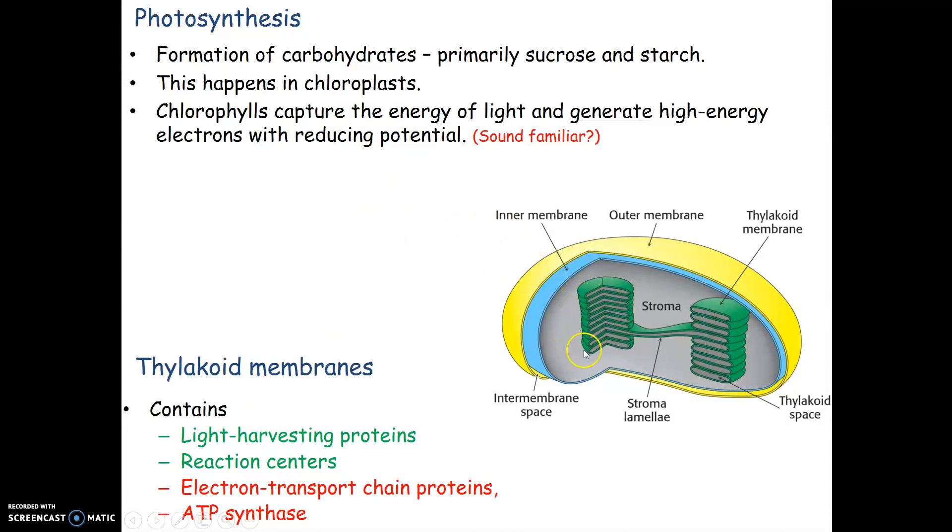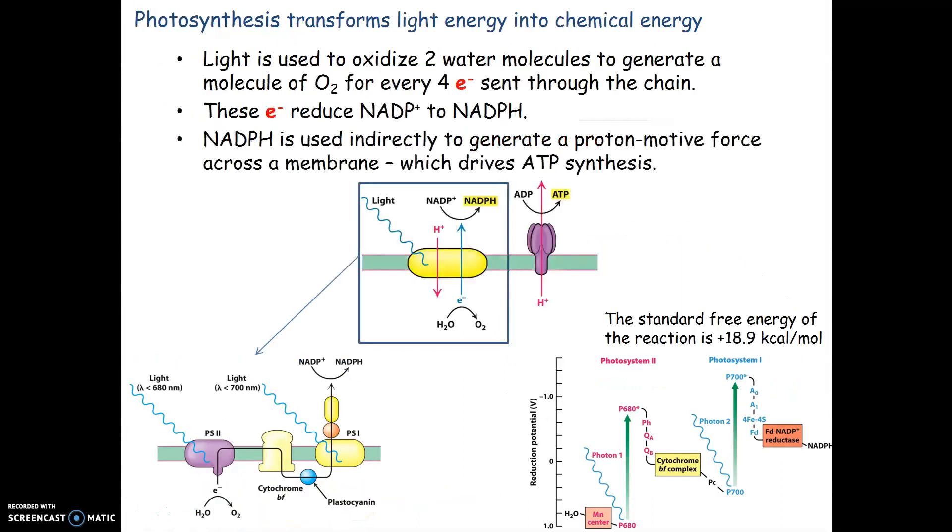Where does this all happen? Within the chloroplast, we have thylakoids and thylakoid membranes. This is the membrane where everything's occurring - where we harvest light using proteins, have reaction centers, and have electron transport with ATP synthase.